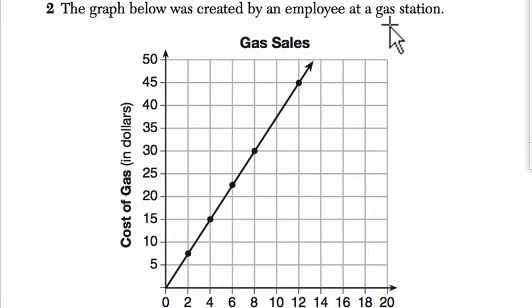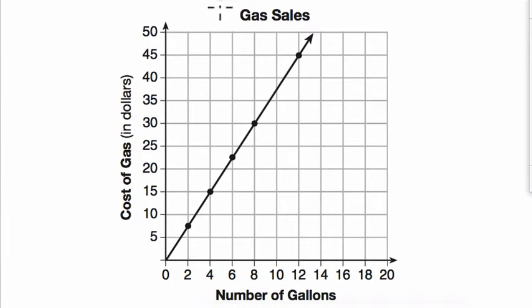The graph below is created by an employee at a gas station. We don't know why, but I guess we can assume that makes sense. So we have an employee making this graph, and we're trying to track the gas sales. That's making a little bit more sense.